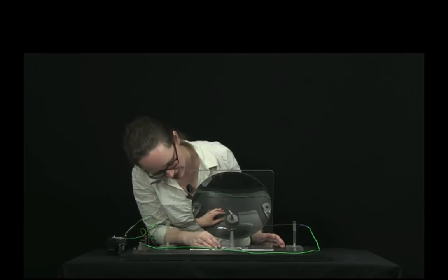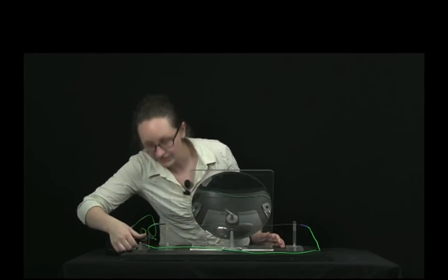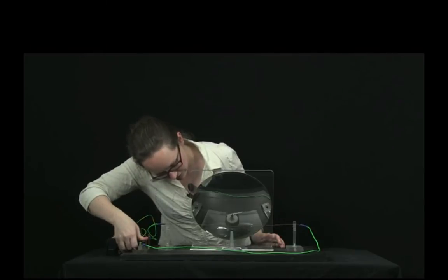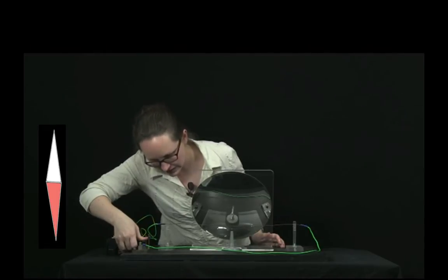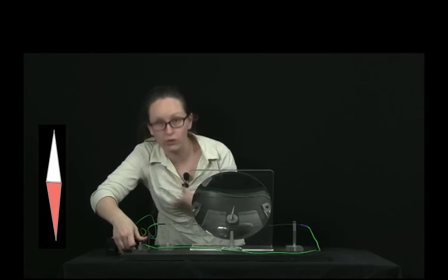If we spin the compass, it's fairly randomly aligned at the moment. But now, if I switch the switch, you can see it lines up with the magnetic field lines of the wire.